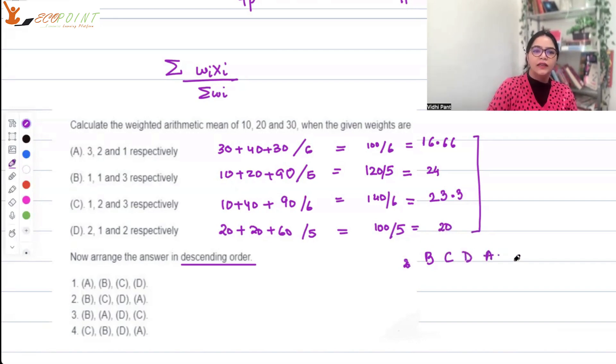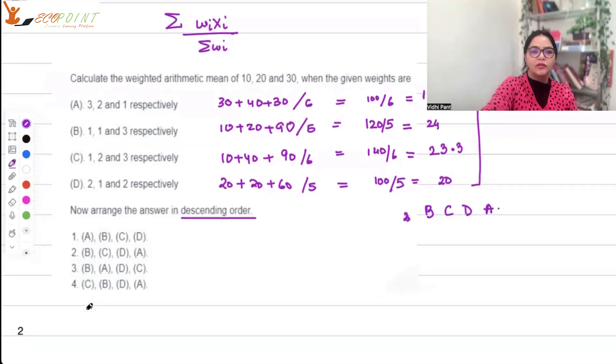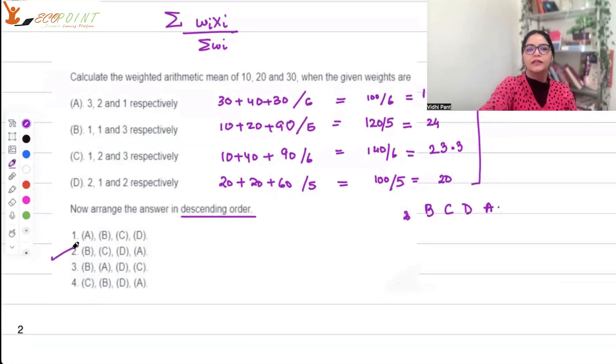B, C, D, A. Where do I see that? In option 2. So option 2 is the correct option.